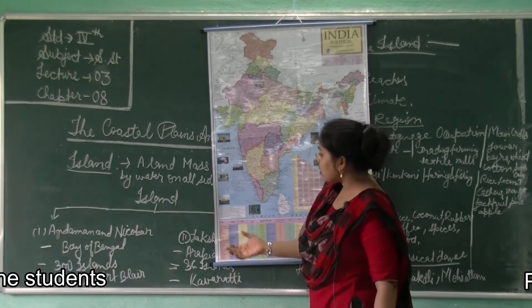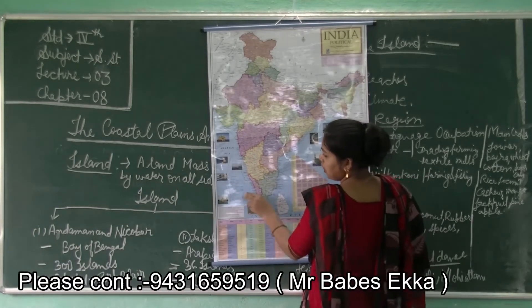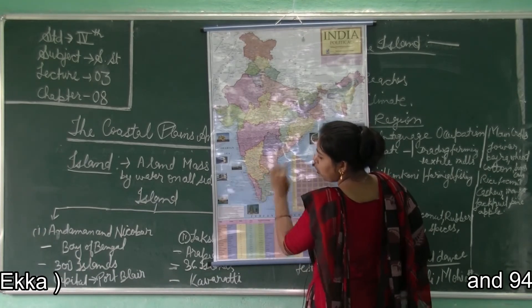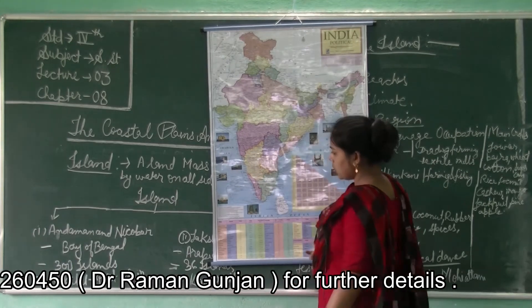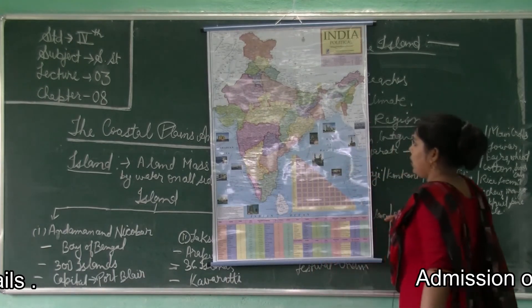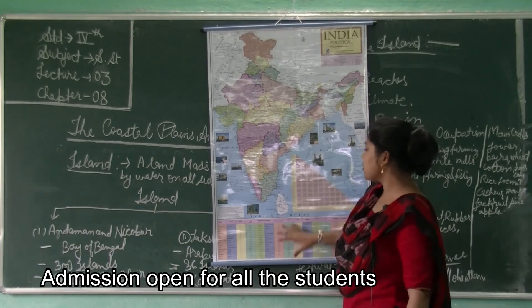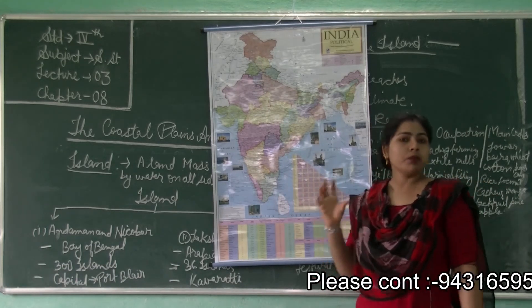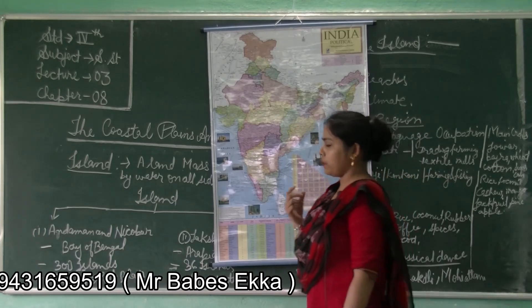The Lakshadweep Islands lie in the Arabian Sea. You can see here some land surrounded by water. The capital of Lakshadweep is Kavaratti and Lakshadweep is made by corals. This concludes the chapter on coastal plains. If you face any problem with any topic, you can contact me between 2 pm to 4 pm. Thank you.